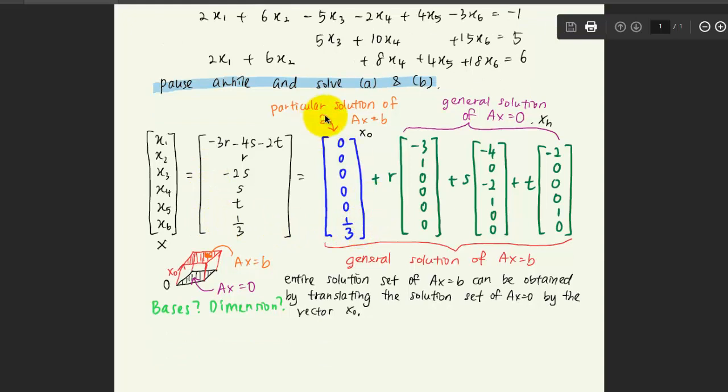So what does it mean by the particular solution and the general solutions here? Let's imagine that this is the general solution of Ax equals 0. And when you add it with the particular solution x0 here, you're actually shifting the solution space to another form, Ax equals b here. So the entire solution set of Ax equals b can be obtained by translating the solution set of Ax equals 0 by the vector x0 here.